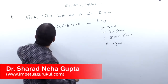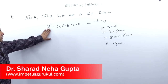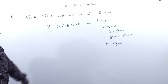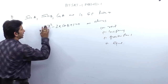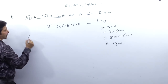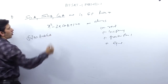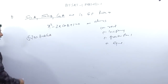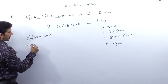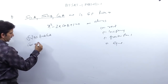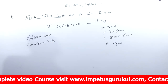Next question: sin a, sin b, cos a are in GP. Then the roots of equation x² minus 2x·cot b + 1 = 0 are always real or imaginary? Since they are in GP, sin²b = sin a into cos a. You can also write: cos a into sec a = cos²b (taking reciprocal). And cos²b can be written as 1 plus cot²b, or equivalently cot²b = cos a·sec a minus 1.